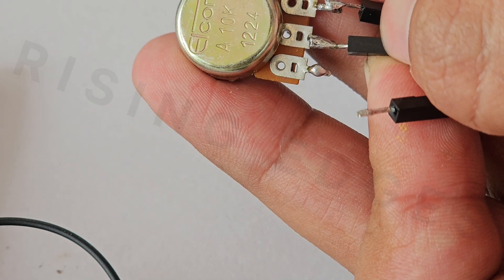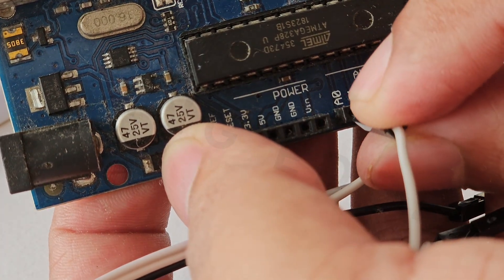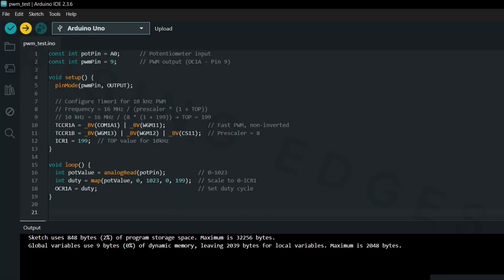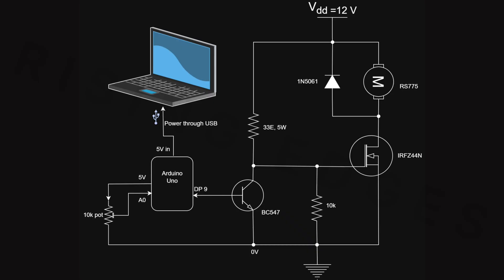To control the speed, I connected a 10k potentiometer to analog pin A0, feeding in a variable voltage. Finally, I uploaded this simple sketch. And there we go, I can now control the motor speed smoothly using this potentiometer. Here is the wiring diagram. All connections are made accordingly.